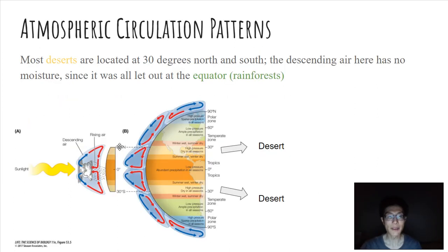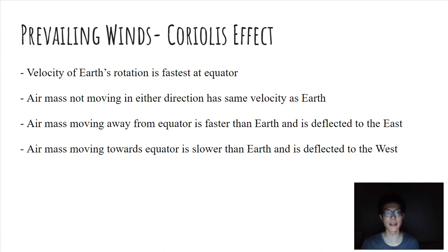Now this is happening in a situation where the earth isn't rotating, so the air is just going up and down, but the earth is actually rotating so the air is going to be slightly deflected. What's really fascinating is that the velocity of the earth's rotation is the fastest at the equator. This is just physics. If the air mass is not moving in either direction, it has the same velocity as the earth.